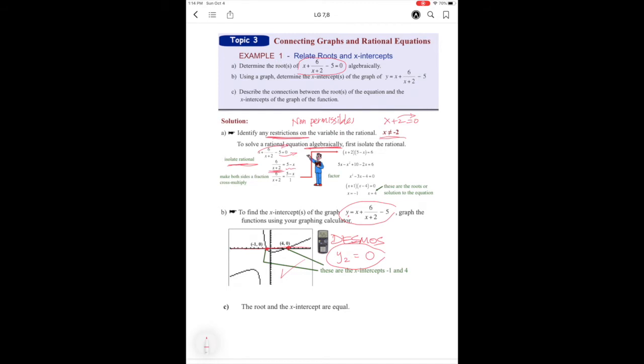So now we have that on that side. Now we're going to multiply both sides by the common denominator, or we can cross multiply, doesn't really matter. So x plus 2, that gets rid of that, times this by x plus 2. So now that gives us up to here. Then we rainbow to get that.